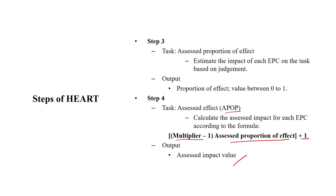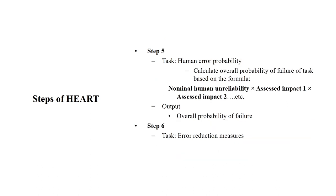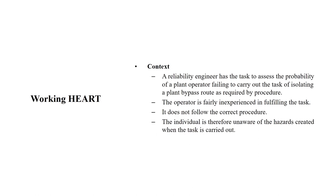Then calculate the overall probability of failure of the task based on the formula to get the overall probability of failure. Then you need to implement task reduction measures. We will go ahead with an example so you can understand it better.